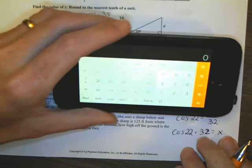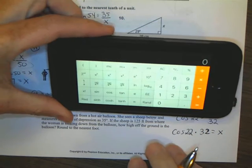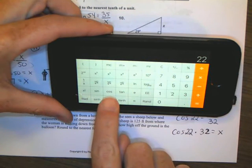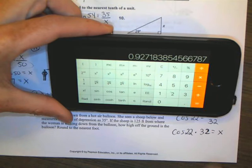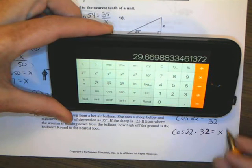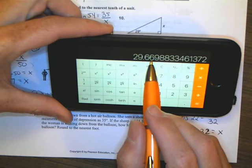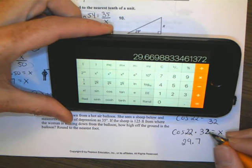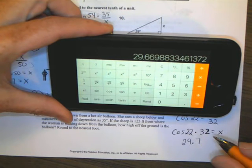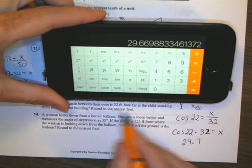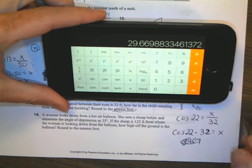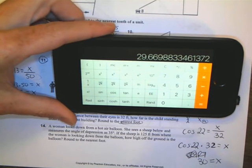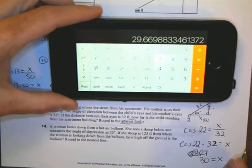The calculator comes out once again. And we have 22 and cosine of that times 32 equals, and I have 0.66. I'm going to round that up to 0.7 equals 29.7. But it says to, I'm going to double check, it says round to the nearest foot. So 29.66, nearest foot becomes 30 equals X. So he's about 30 feet away from the building. That's number 13.